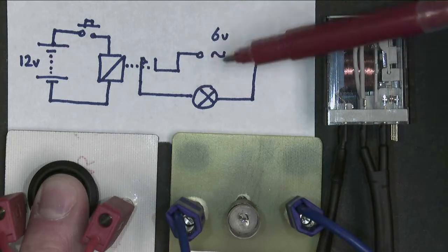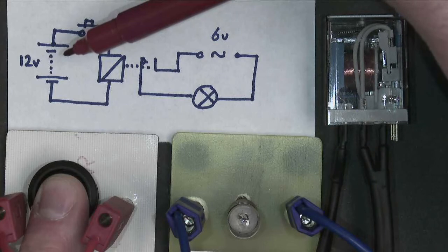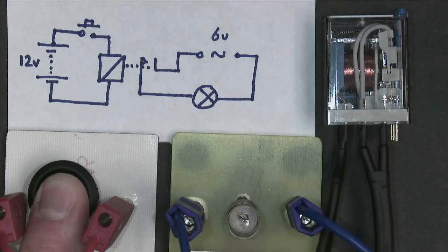So the bulb's using an AC supply at 6 volts, I mean a 12 volt DC supply, to control the relay. Let's have a look what happens.